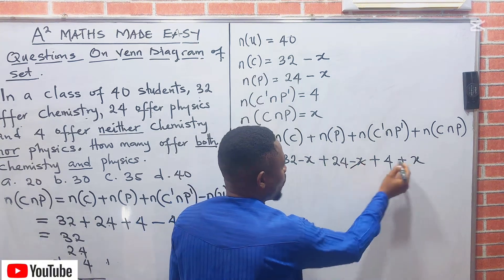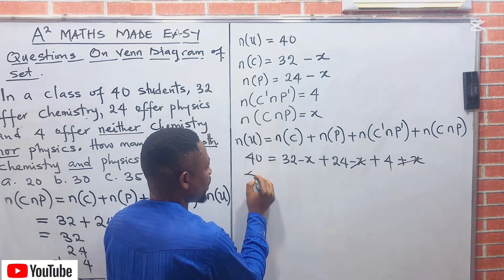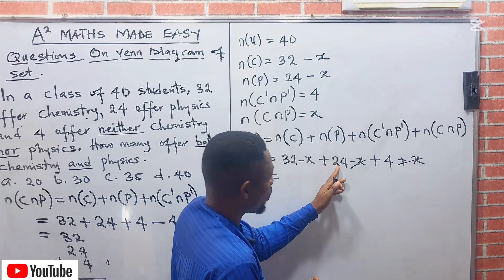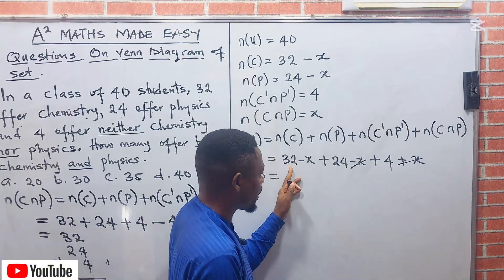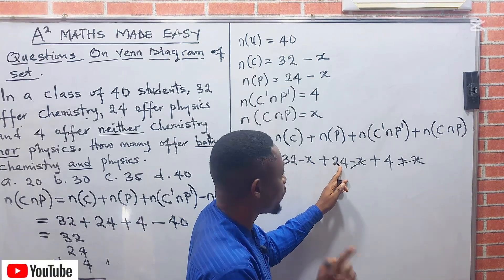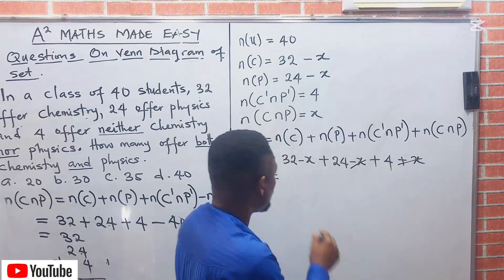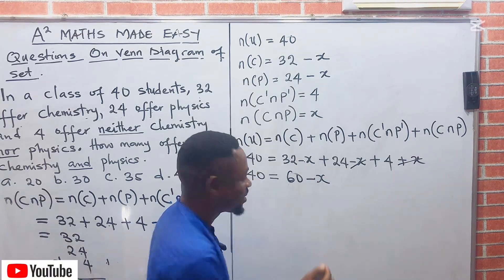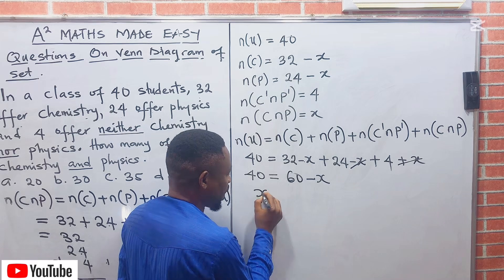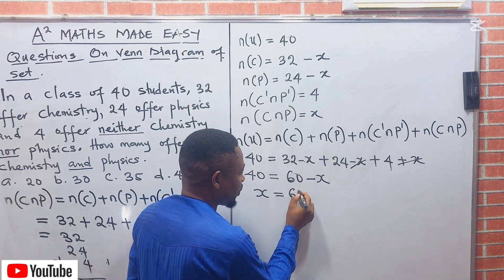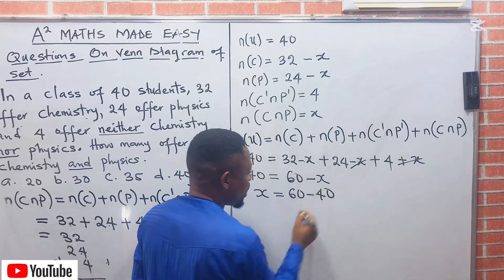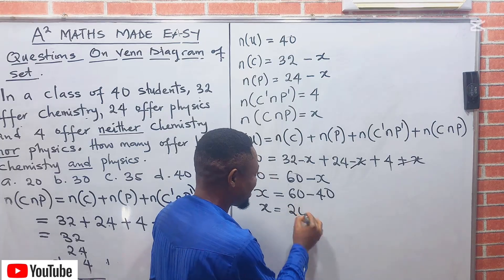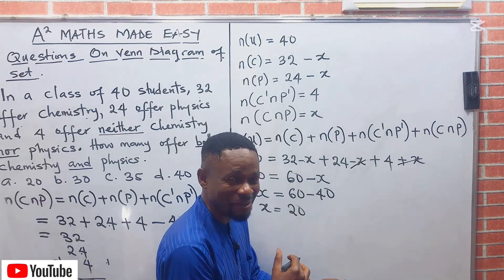The minus X terms and the plus X partially cancel: minus X, minus X, plus X leaves minus X. So we have 40 equals 32 plus 24 plus 4 minus X, which is 60 minus X. Carrying X to the left and 40 to the right gives X equals 60 minus 40, so X equals 20. The answer is 20, which corresponds with the correct option.